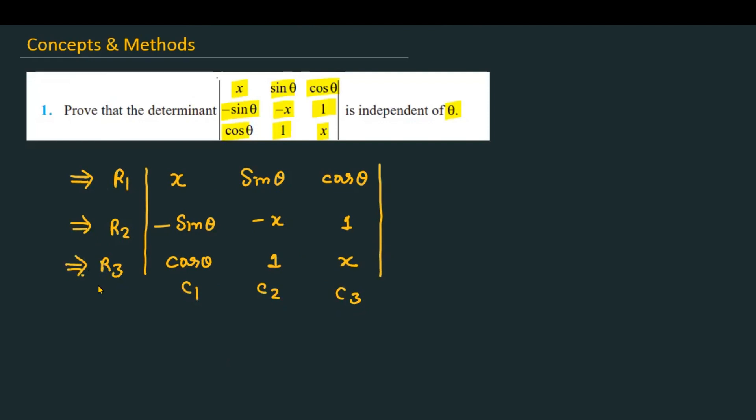We will simply open the determinant and check that theta does not appear in the final result. I will expand it along R1. I expect that basic knowledge of determinants will be assumed, and we will expand with respect to R1.